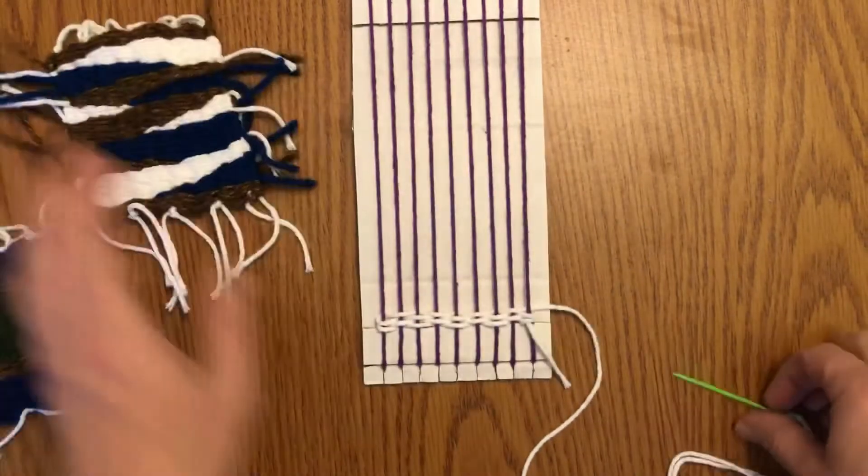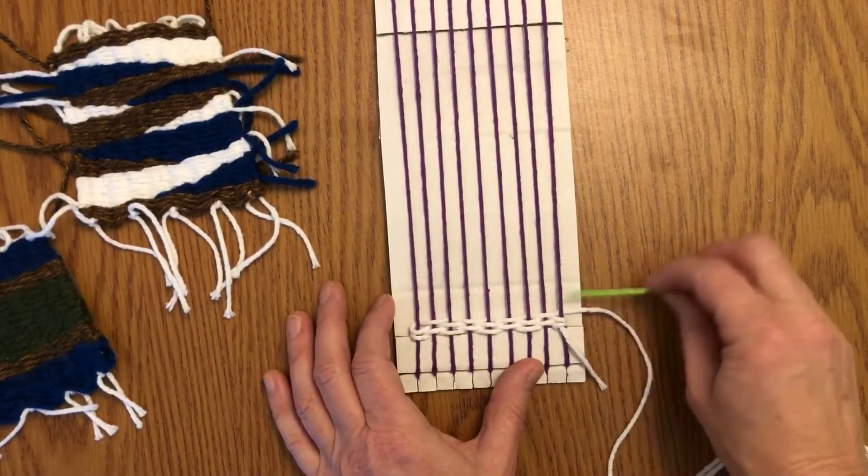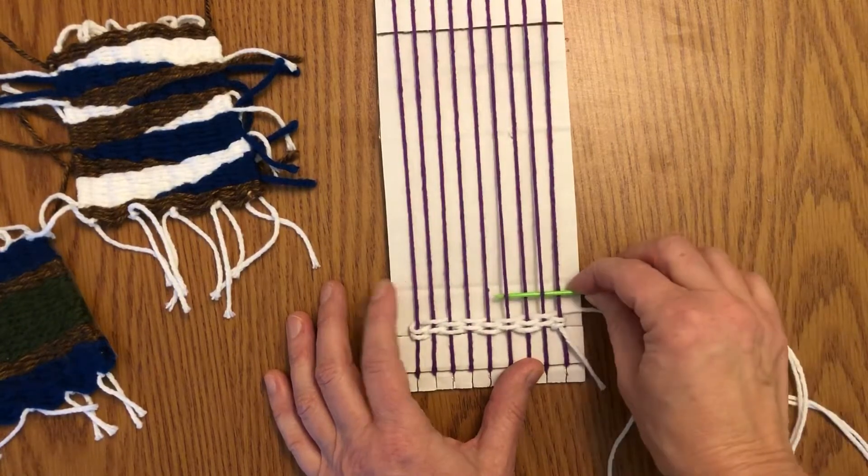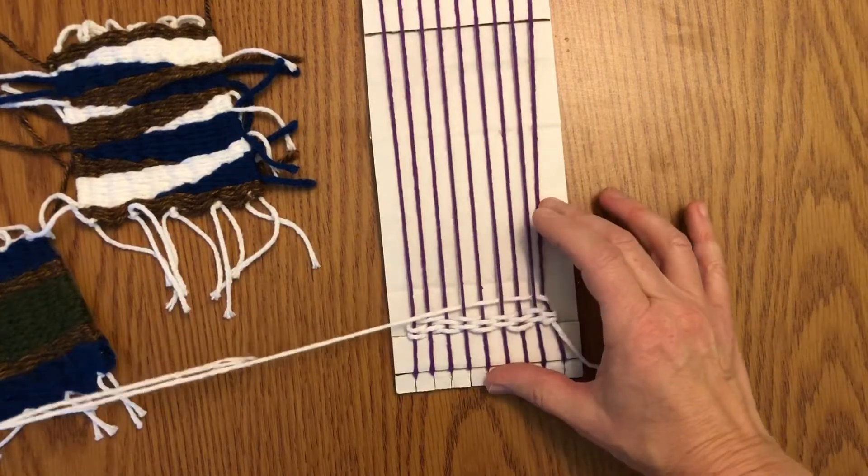Let's say I wanted to go to the middle. I have to go over under, over under, and maybe I'll stop here, a little past the middle. Coming back, I'll go back over that same one where I ended.